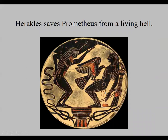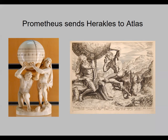Heracles finds that Prometheus has been punished for stealing fire from the gods. His punishment is being chained to a rock at sea, where every day an eagle comes down and eats his liver, and every night it grows back — on and on forever. Heracles unchains Prometheus — fortunately after his liver had a chance to grow back — and asks where the garden is. Prometheus says he doesn't know, but Atlas knows, because his daughters guard the garden.